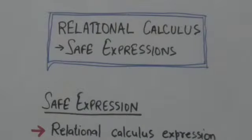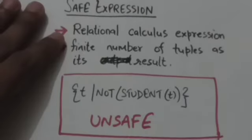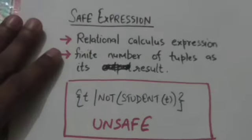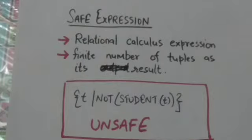Hello friends, welcome back. In this tutorial we will study about safe expressions in relational calculus. If a relational calculus expression gives a finite number of tuples as its result, then it is said to be safe. Otherwise, it is called unsafe.